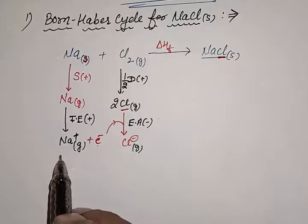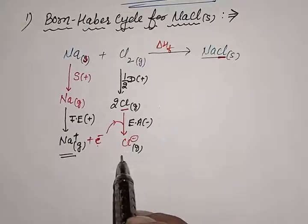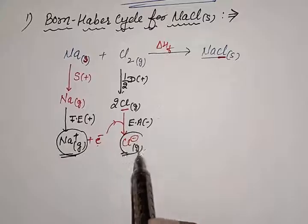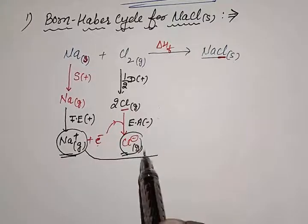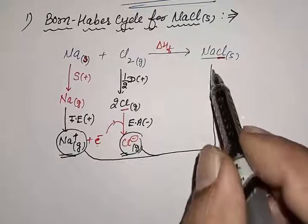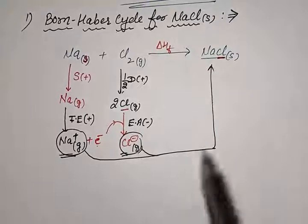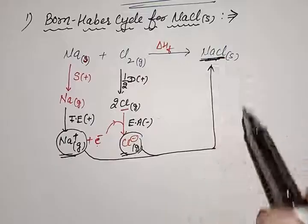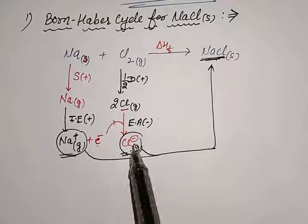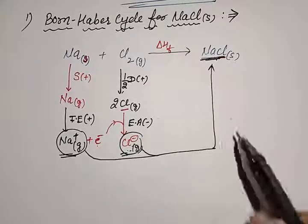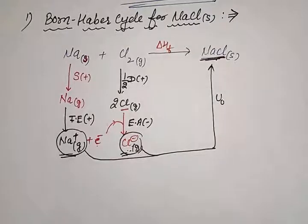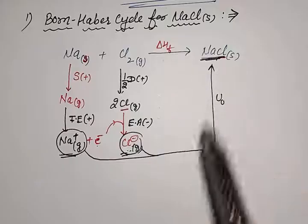So when a gaseous cation and gaseous anion are formed, this gaseous cation and gaseous anion combine together to form one mole of the ionic solid. Because one mole of ionic solid is formed and the constituent particles — cation and anion — are present in the gaseous state, the amount of energy released is called lattice enthalpy. So this is the Born-Haber Cycle for NaCl.